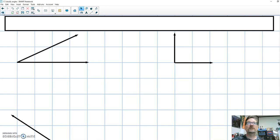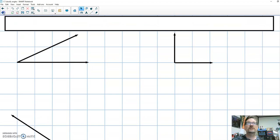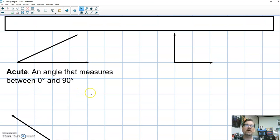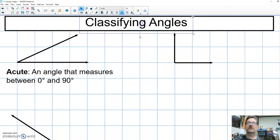So when we are classifying angles, we can do it four ways. You can see there are four angles on your page. This first angle is called an acute angle. An acute angle will measure always between zero and 90 degrees. So any number here between zero and 90 works.